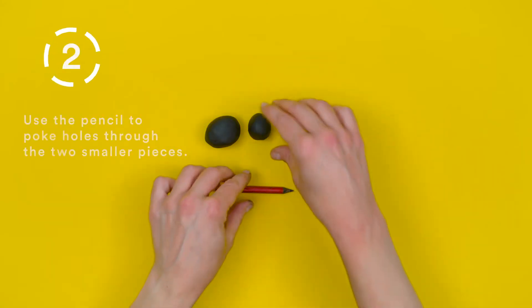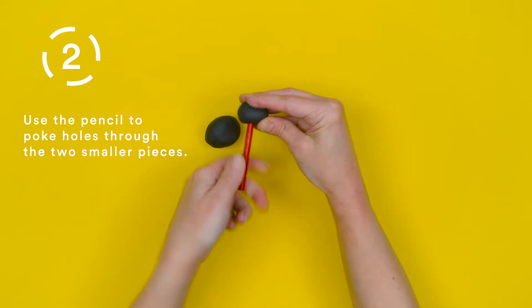Step 2. Use the pencil to poke holes through the two smaller pieces.